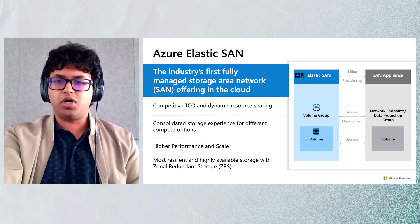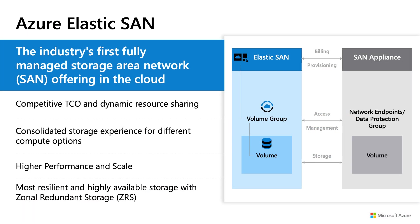Azure Elastic SAN offers the following features. First, competitive TCO — total cost of operations — and dynamic resource sharing. This enables you to make a bulk purchase of storage capacity and provision performance at a low cost. Azure Elastic SAN offers the flexibility to scale storage capacity incrementally as needed, to provision capacity and performance independently, and to share the already provisioned performance across volumes. By leveraging the economies of scale and resource pooling of Elastic SAN, you can account for peak traffic without needing to over-provision, resulting in a more cost-effective solution.